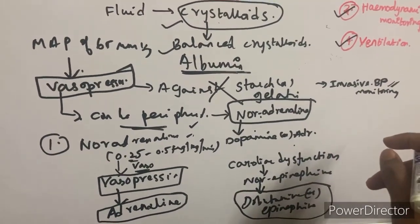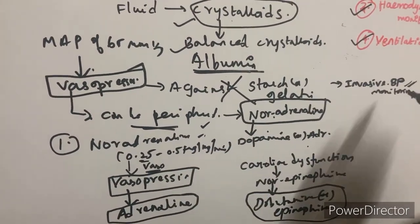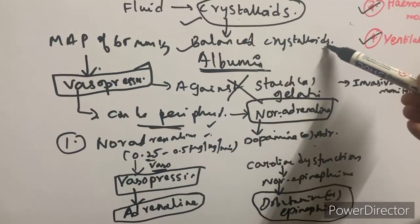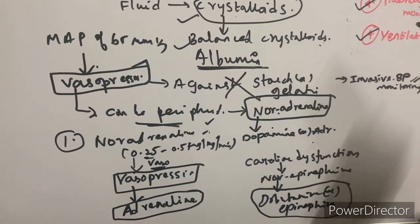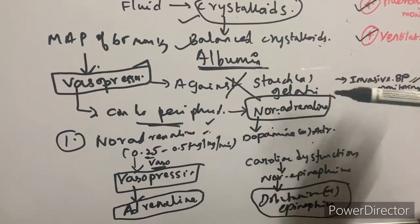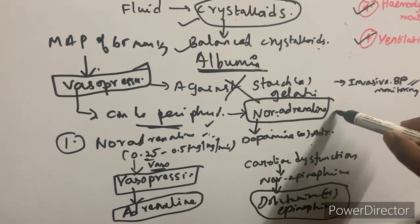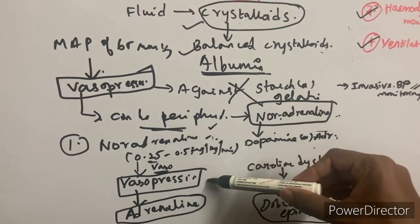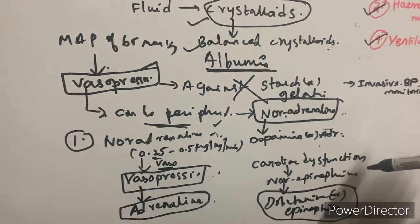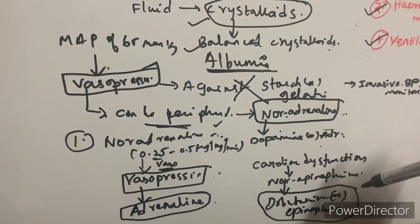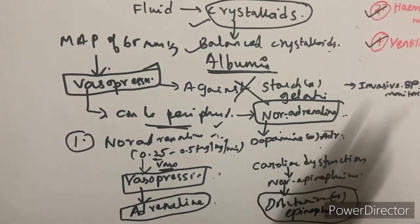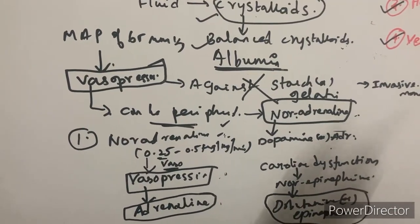To summarize the hemodynamic changes: balanced crystalloids are the initial fluid of choice over normal saline; albumin can be used as a second-line strategy when large volumes are needed. Starch and gelatin should be avoided. Vasopressors can be started peripherally — noradrenaline first, then vasopressin, then adrenaline. For cardiac dysfunction, norepinephrine is first line and dobutamine or epinephrine second line.